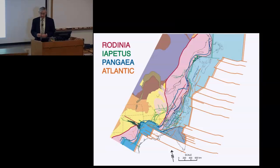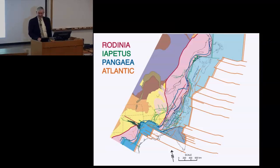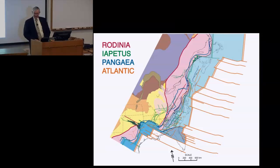Q: Is there a name associated with that earlier supercontinent? A: Yes — one is called Columbia. There's another one called Ur. That's about as far as I can go.